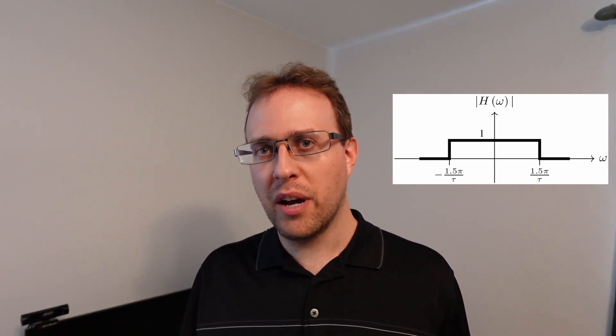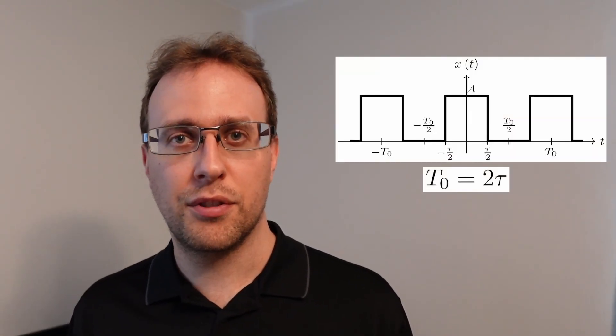Even though we usually think about frequency responses just in terms of positive frequencies, we need to remember that the negative frequencies are also included. So the frequency response of this ideal filter is 1 from negative 1.5 pi over tau to positive 1.5 pi over tau. We've said that the fundamental period t0 is equal to 2 times tau.